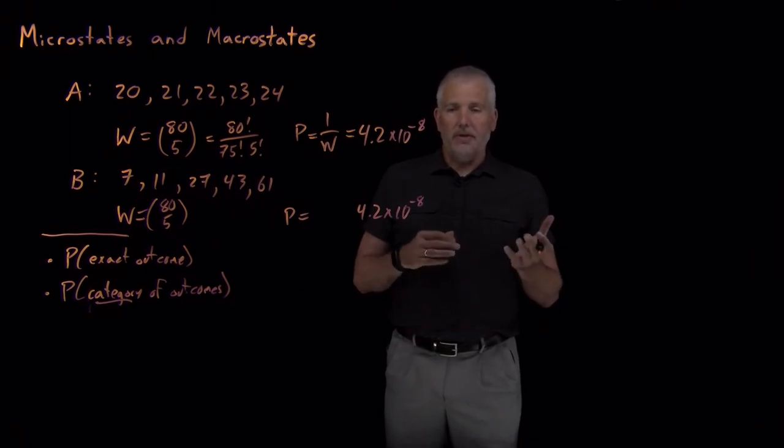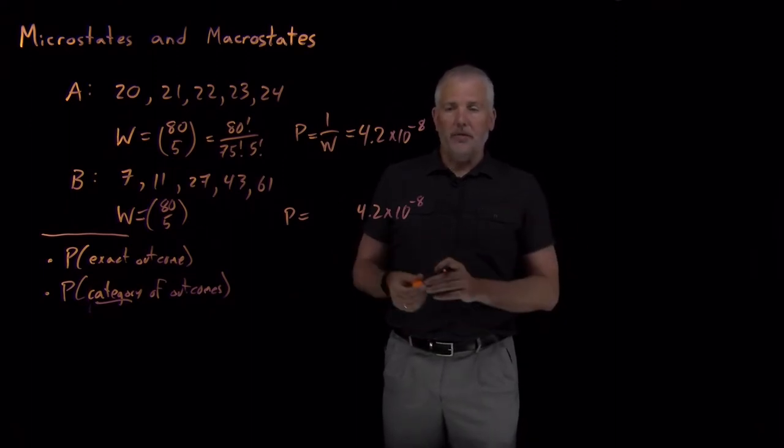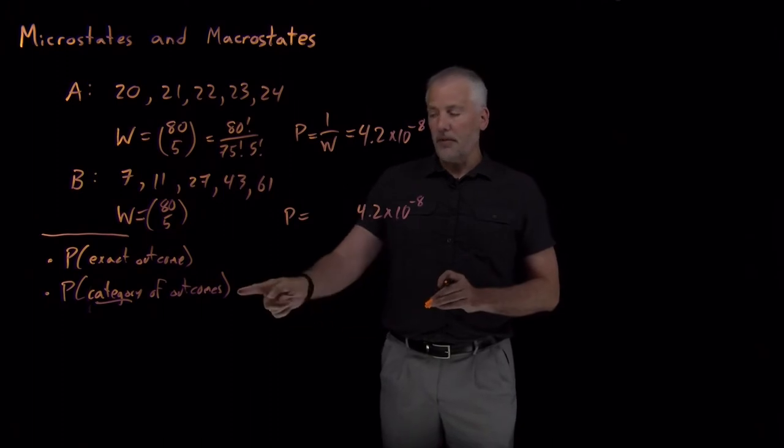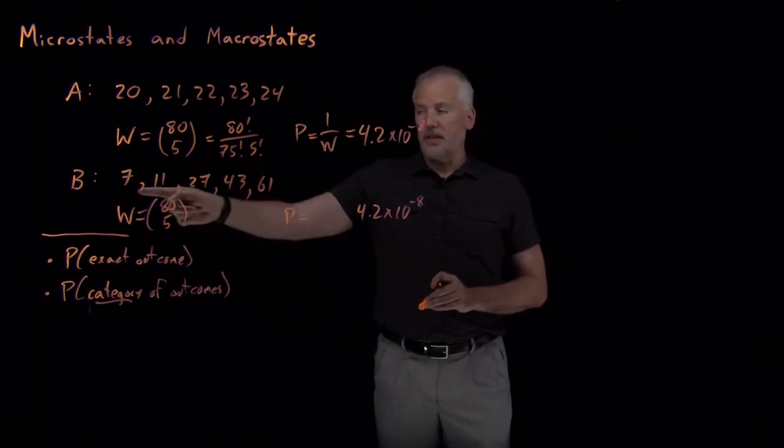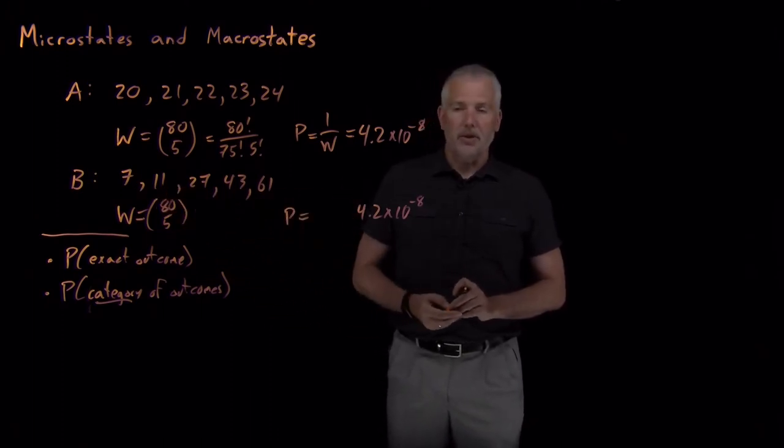We're interested in whether the numbers are consecutive, all of them consecutive, some of them consecutive, none of them consecutive. That's a very different question than calculating the probability of this exact set of numbers coming out.